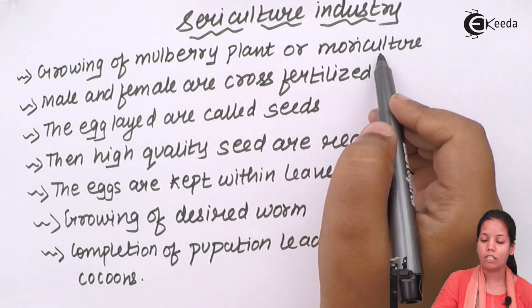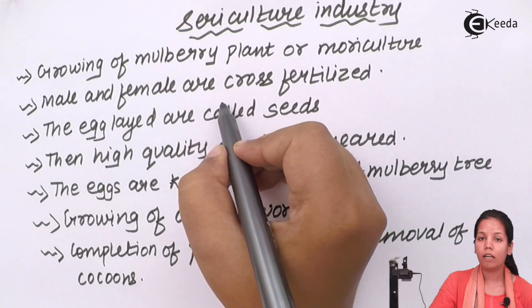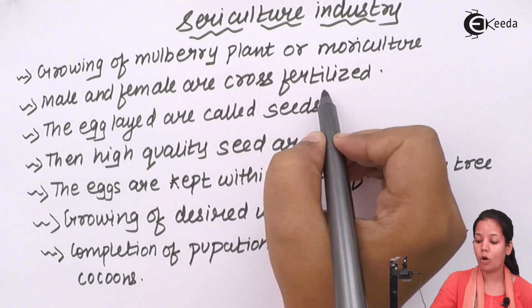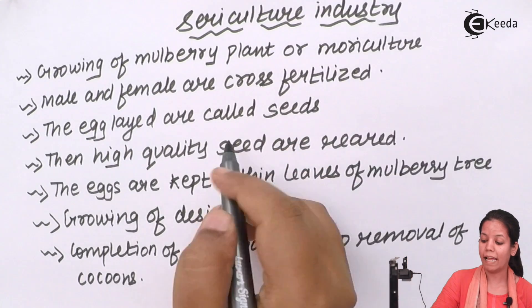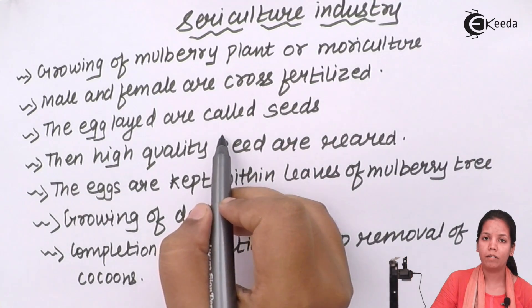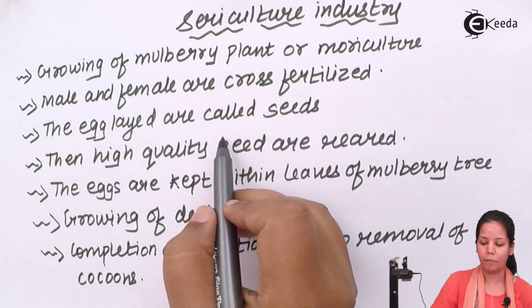Once mori culture is done, male and female silkworms are cross-fertilized. Once that happens, the eggs are finally laid. In simple language, seeds are selected.